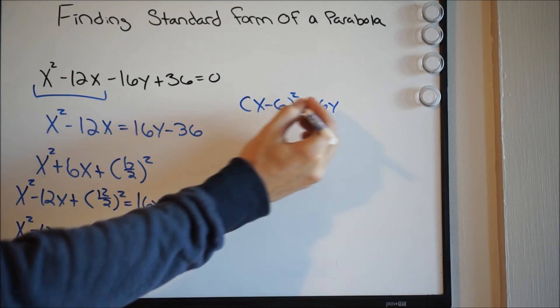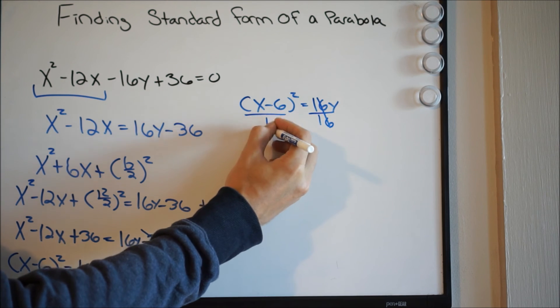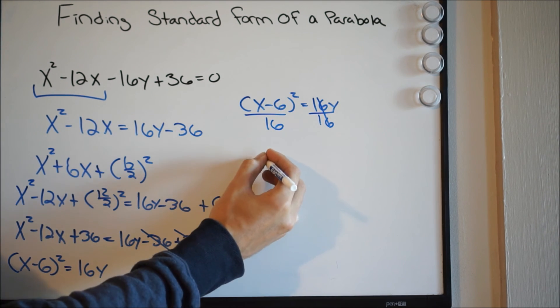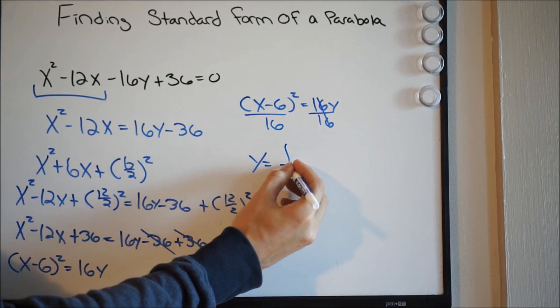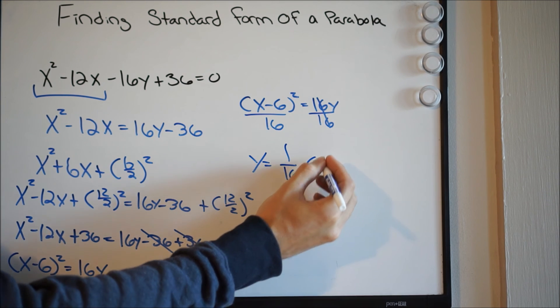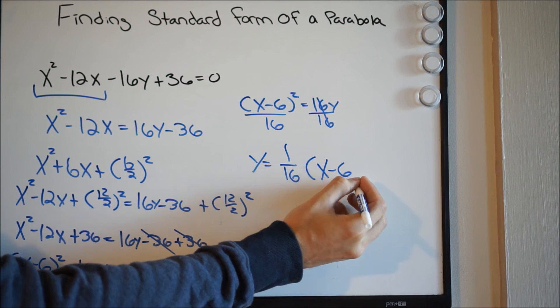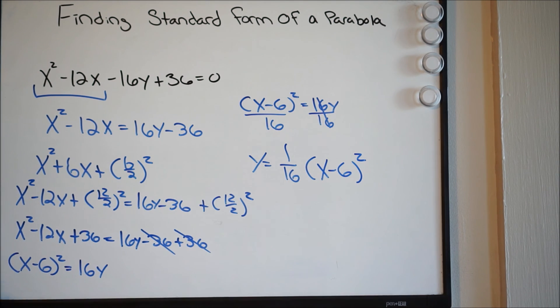And you get the following. You're going to get y equals 1 over 16, times x minus 6 squared. This right here will be our final equation of our parabola in standard form.